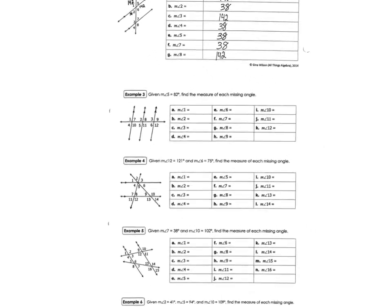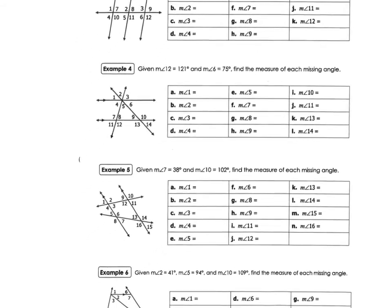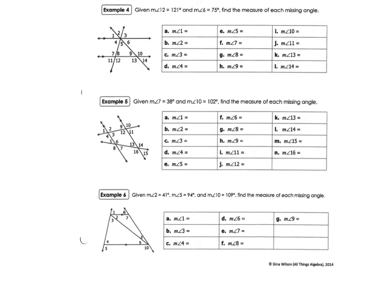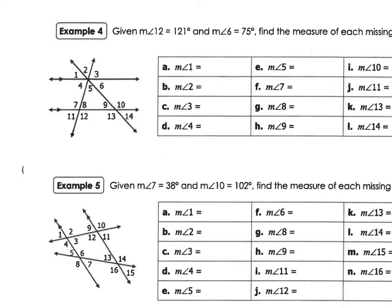I'm going to leave you number three to do on your own because some of these get a little crazy. Let's look at number four because this one is different. It gives us that angle 12 is 121 degrees and angle 6 is 75 degrees. Find the measure of each missing angle.